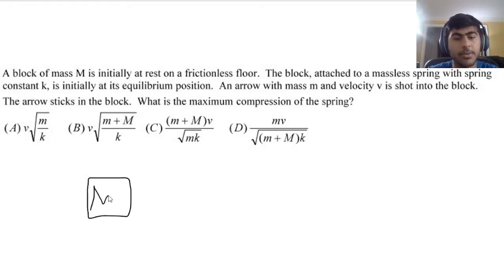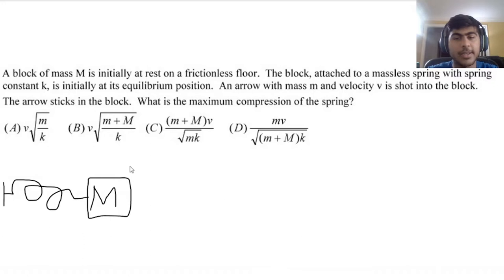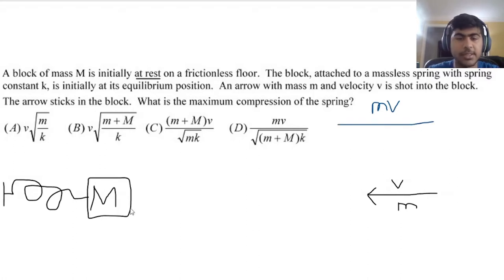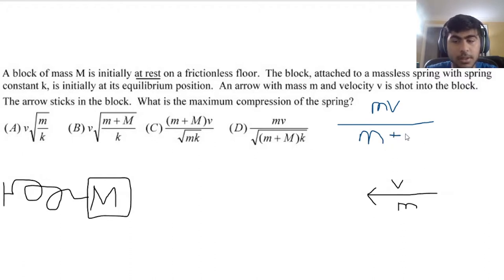Let's draw out what's going on. We have a block with mass M at rest — so it has no momentum. Then we have this arrow with mass m moving with velocity v. The total initial momentum for the system is mv. The arrow sticks in the block, so they become one object with mass little m plus big M. This is an inelastic collision, giving us a combined mass of M plus m.